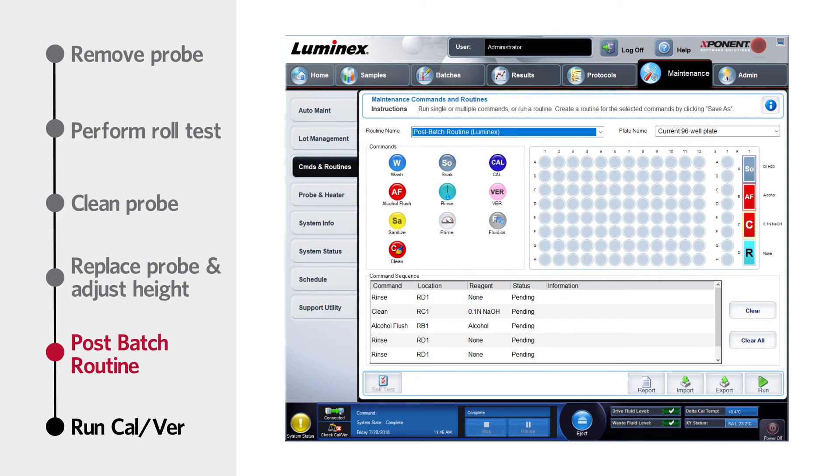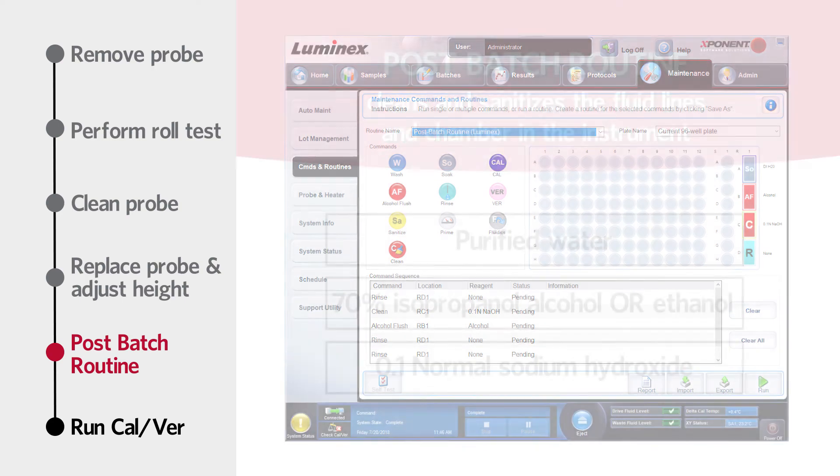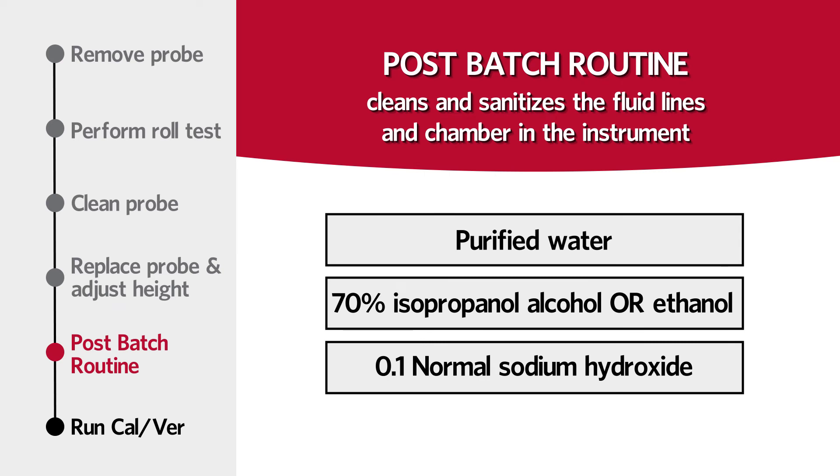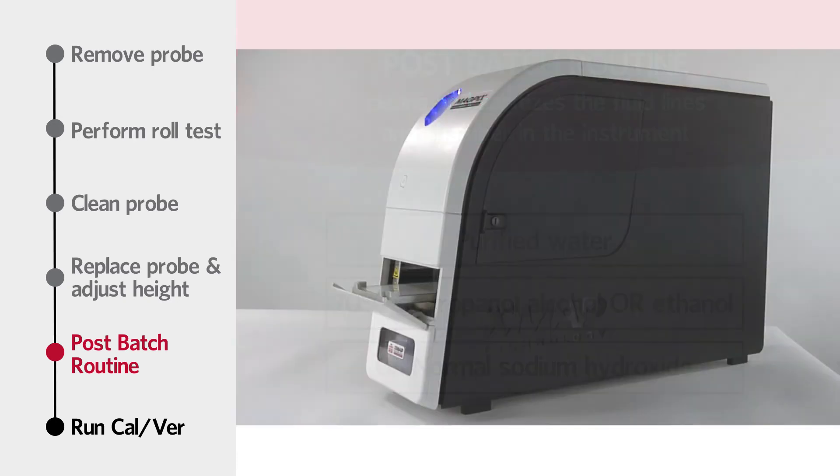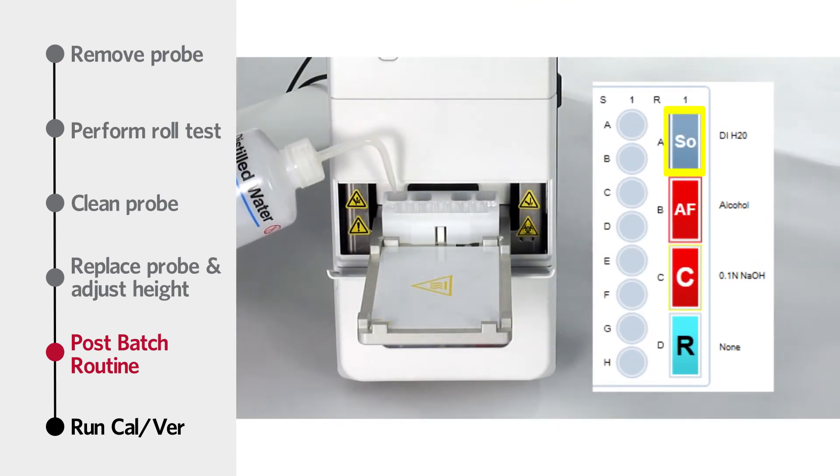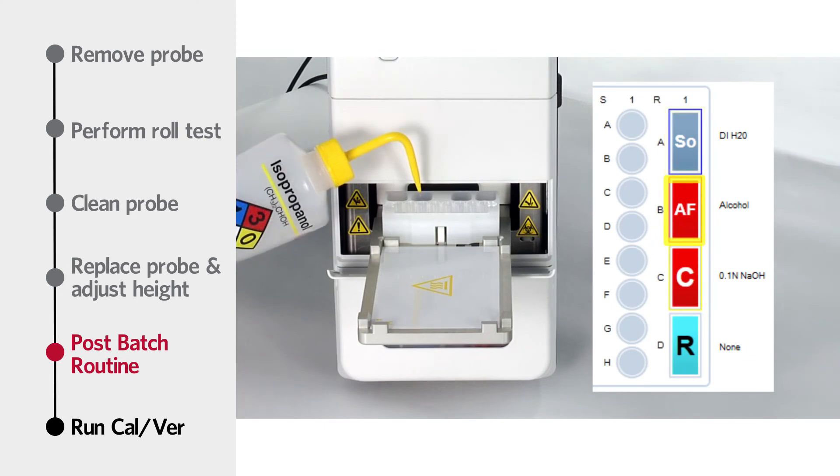Next, run a post-batch routine from the maintenance page, commands and routines tab. This routine will clean and sanitize the fluid lines and chamber in the instrument. You will need purified water, 70% isopropanol alcohol or ethanol, and 0.1 normal sodium hydroxide. Use the plate diagram to fill the off-plate reagent block wells accordingly.